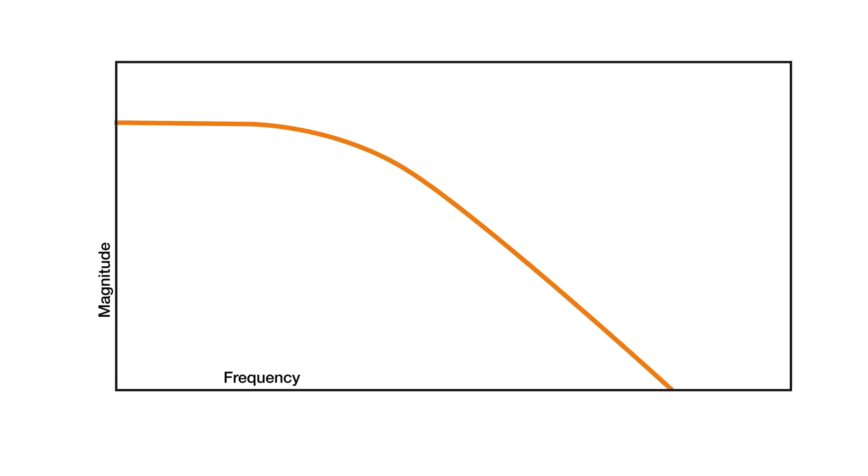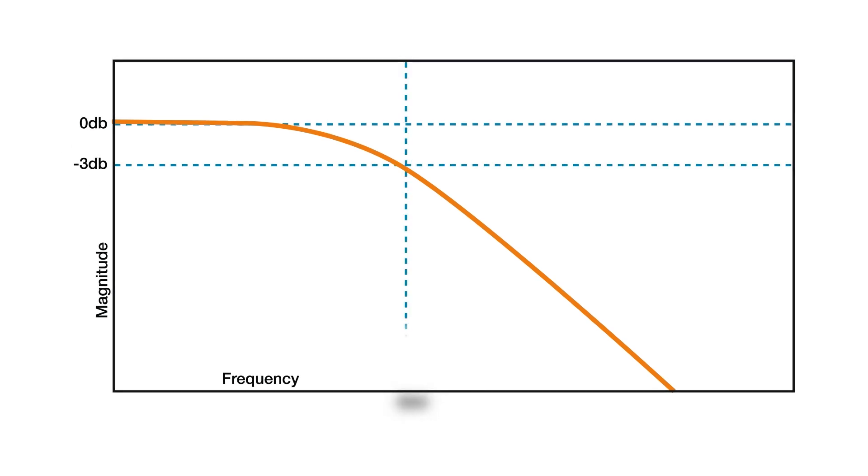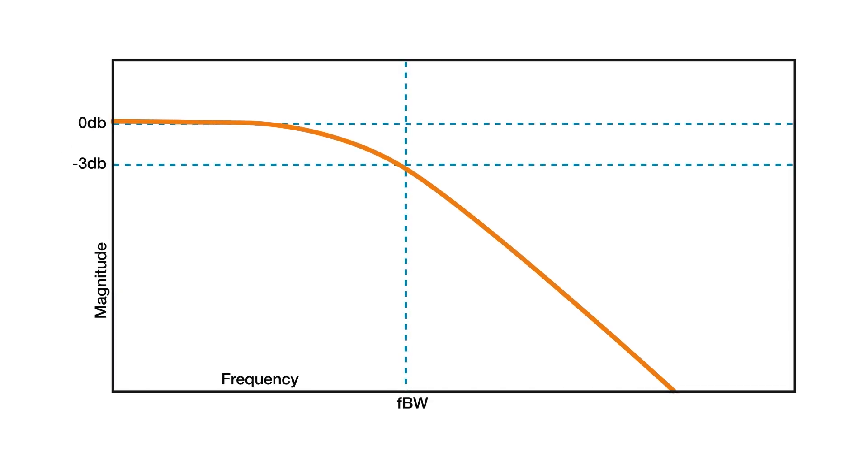That shape means it passes most of the signal content from DC or 0 hertz to wherever the attenuation drops by 3 decibels. That's where the bandwidth spec comes from.